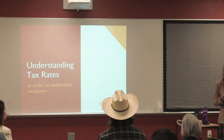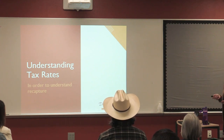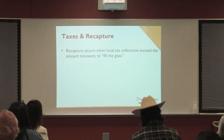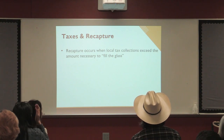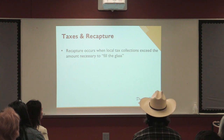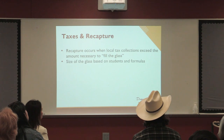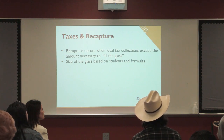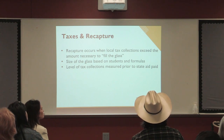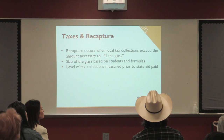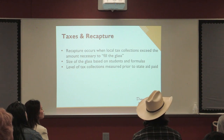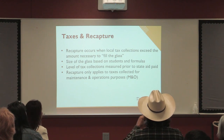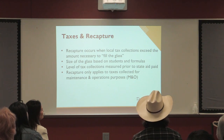To understand recapture, we've got to talk about the tax rate and tax collections, because that's what drives recapture. Recapture happens when your local tax collections exceed the amount necessary to fill the glass. The size of that glass depends on your students and the funding formulas — not your property taxes. Then the level of tax collections is measured before any state aid is received. Importantly, recapture only applies to the maintenance and operations tax rate — it's only one side of the tax rate.